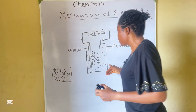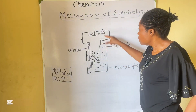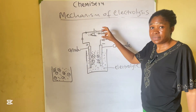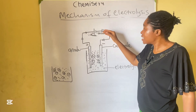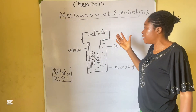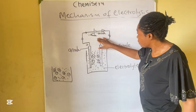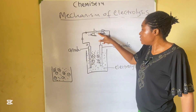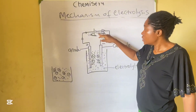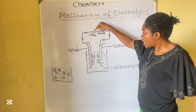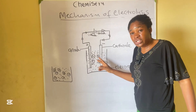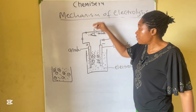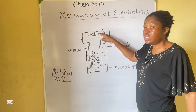What happens when there is a passage of electricity — when it is connected to a battery or whatever generates the electric current? In an electrochemical cell, the cathode is positively charged and the anode is negatively charged. But for an electrolytic cell, the cathode is negative and the anode is positive.